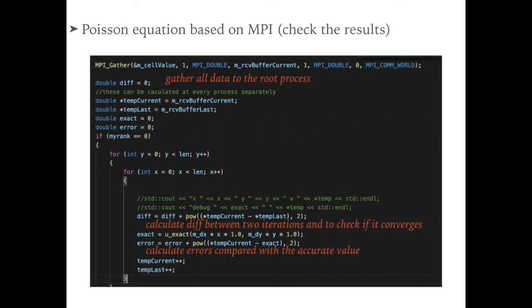For the step of checking the results, we need to gather our data to the root process, and then we can calculate the difference between two iterations and to check if it converges. And we can also calculate errors compared with the accurate value. By using this error, we could make sure if we need to jump out of the iteration.